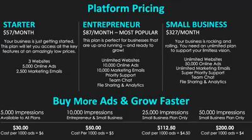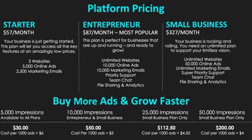We also have our small business platform for $327 a month — your business is rocking and rolling, and this is the plan for you. You need an unlimited plan to support your limitless vision. It includes unlimited websites, 50,000 online ads, unlimited marketing emails, super priority support, team chat, file sharing, and analytics. If you want to buy more ads and grow faster, you can do that too. 5,000 impressions is available to all plans at just $30. 10,000 impressions can be added with our entrepreneur and small business plan for just $50. 25,000 impressions can be added to the small business plan for $112.50, and 50,000 impressions can be added to the small business plan for just $200.